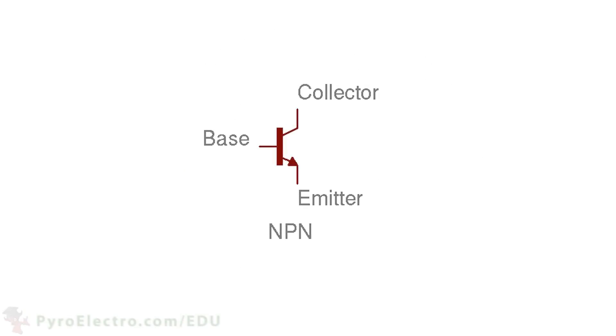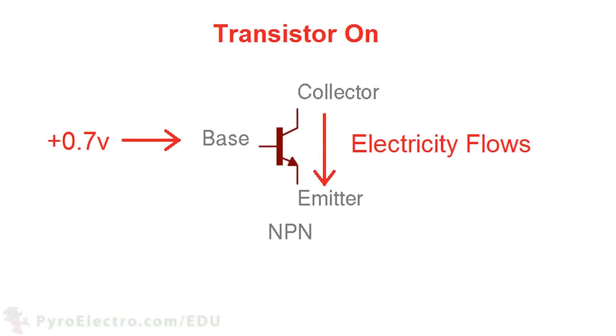The 2N3904 is what is known as an NPN type transistor. You can recognize NPN type transistor circuit symbols because they will have an arrow on the emitter pin pointing away from the transistor. An NPN transistor is switched on by connecting the transistor's base pin to a positive voltage, similar to how a diode turns on. When a transistor is in an on state, electricity can flow between the collector and emitter pins. This is why the LED turned on in our previous experiment.